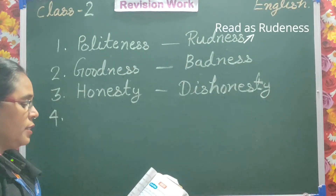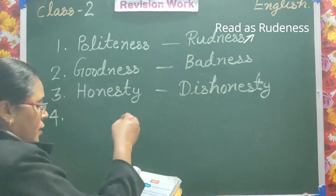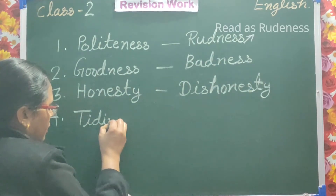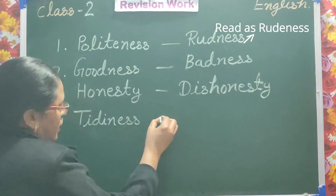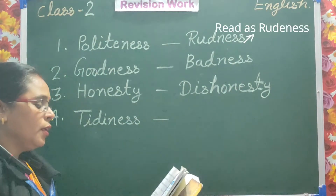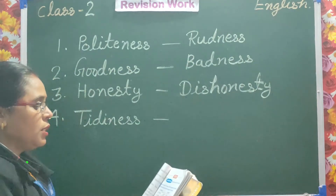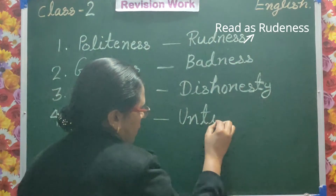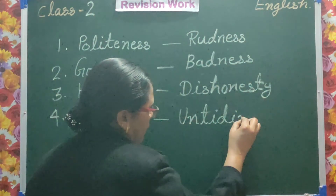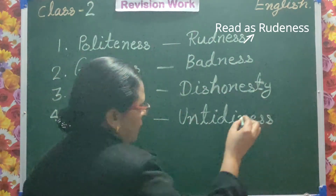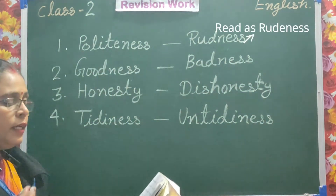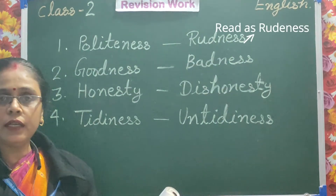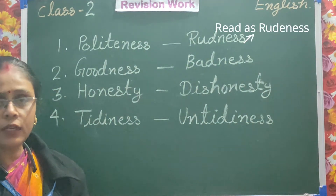Your fourth word is 'tidiness' — T-I-D-I-N-E-S-S. And its opposite is 'untidiness' — U-N-T-I-D-I-N-E-S-S. Tidiness means keep clean, and untidiness means not clean.